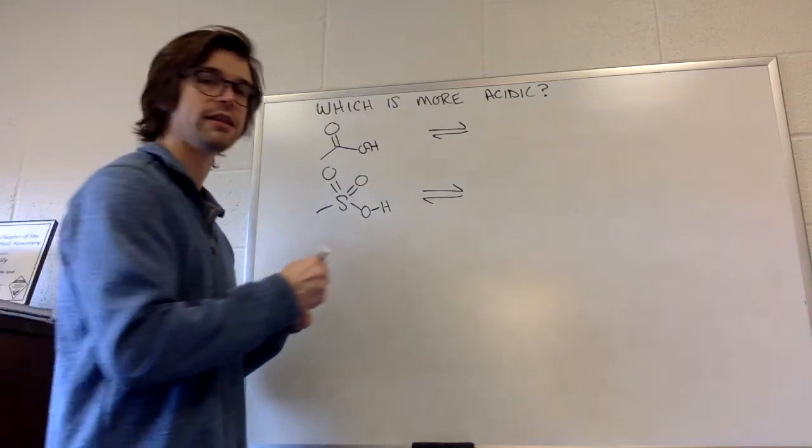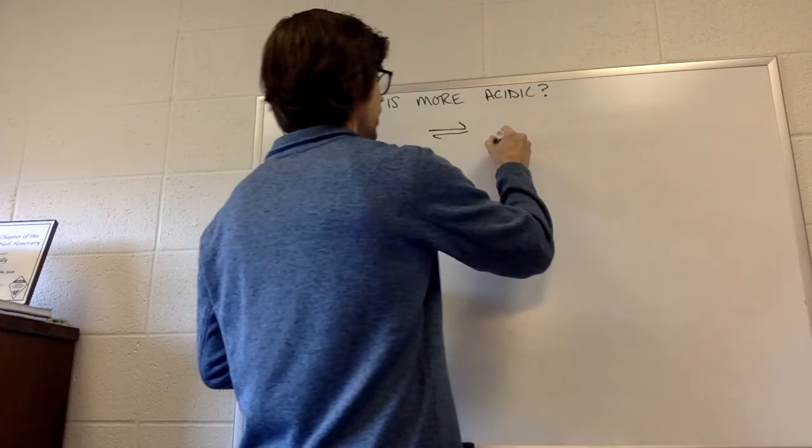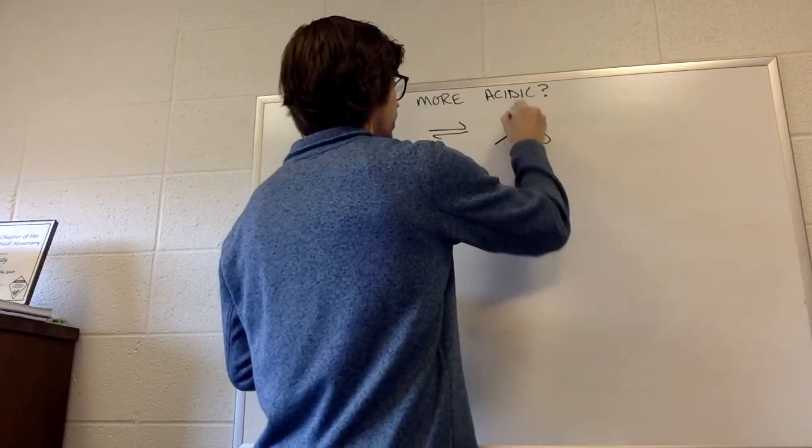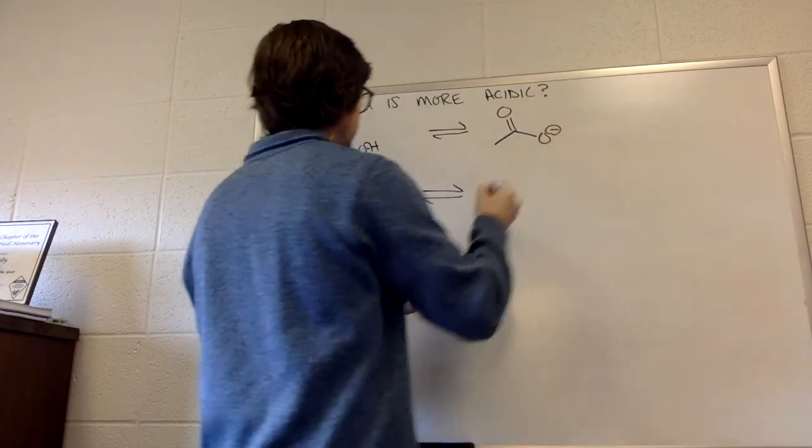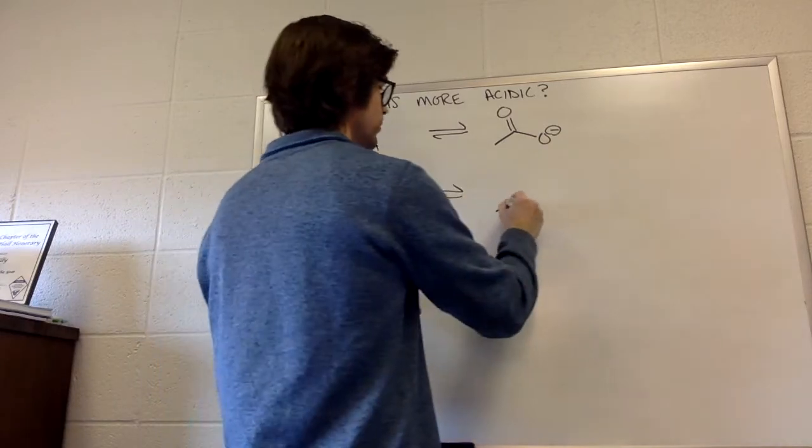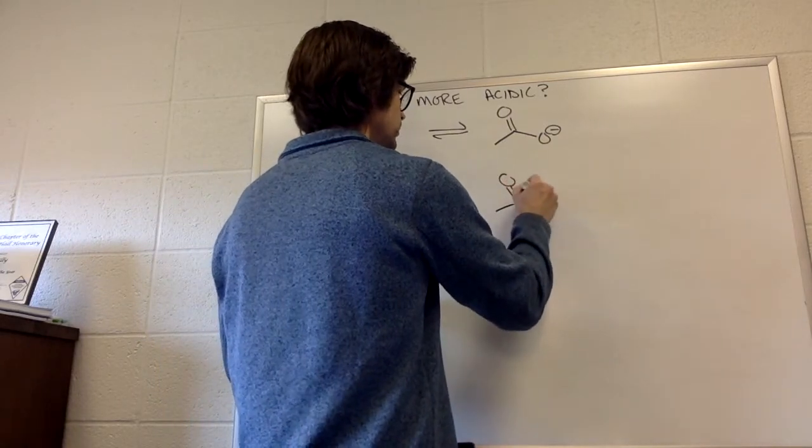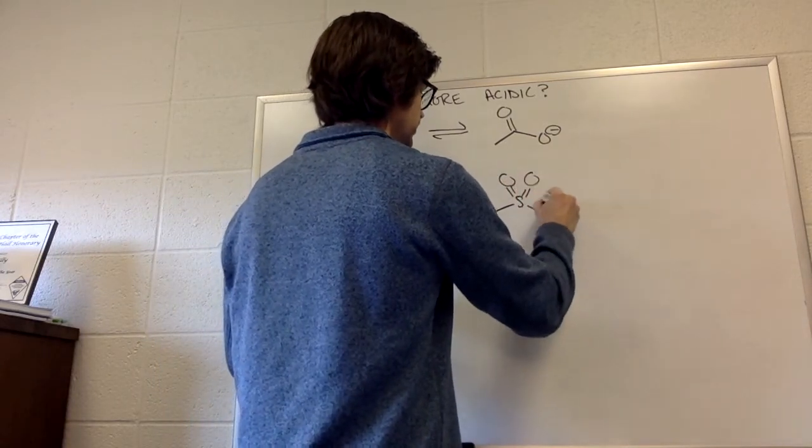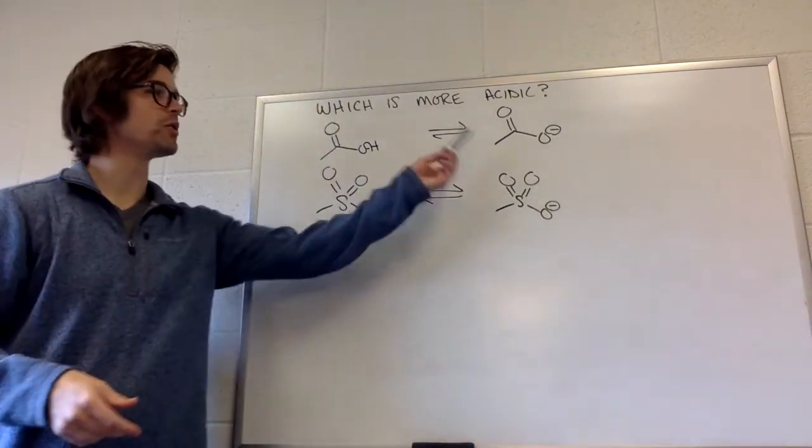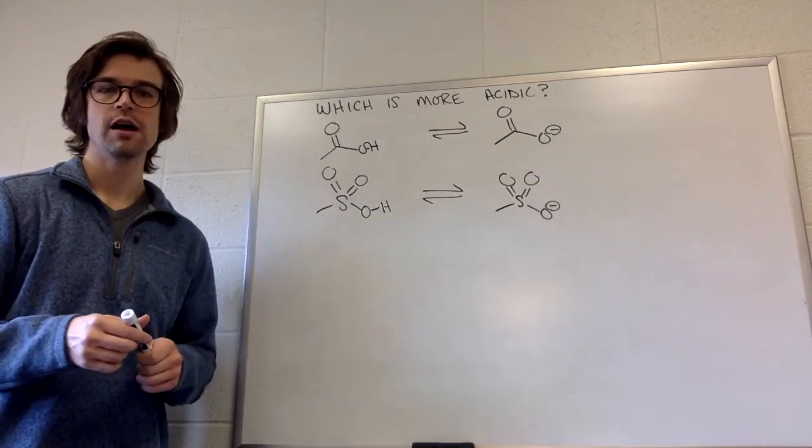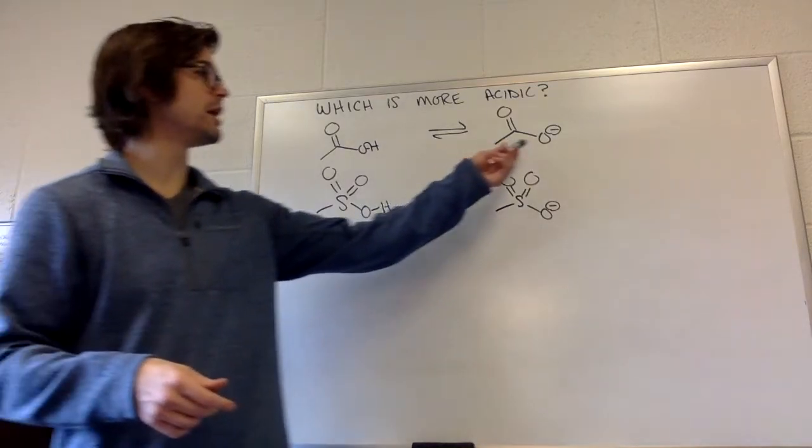All right, what do we do? Again, we look at the structure of the conjugate base. So we have our normal carboxylic acid, and we have our sulfonic acid. So which of these is going to be the more stable conjugate base?